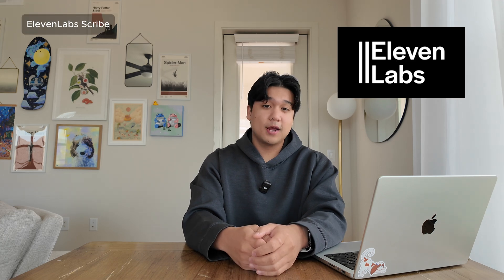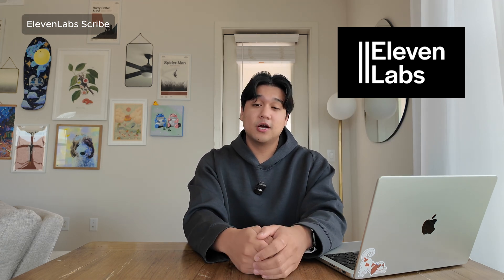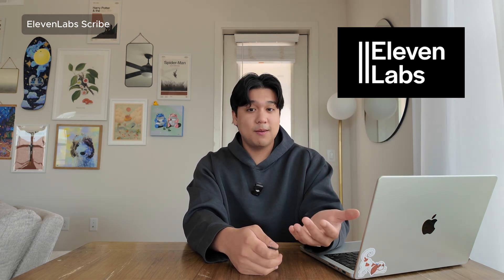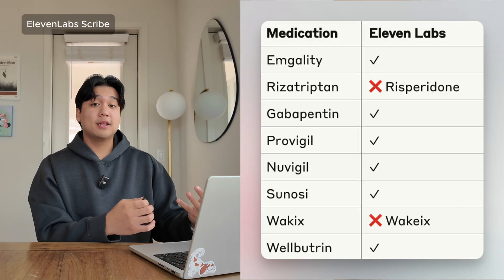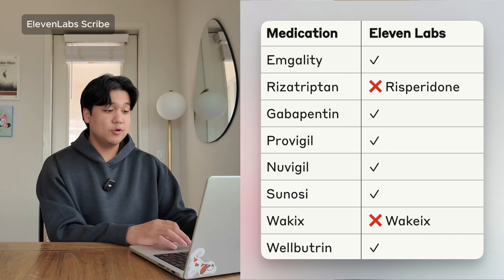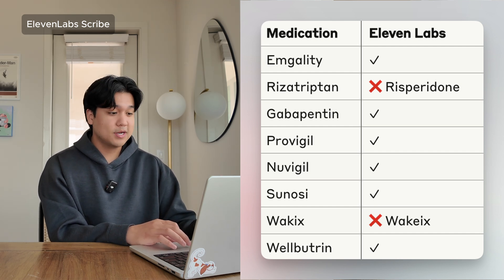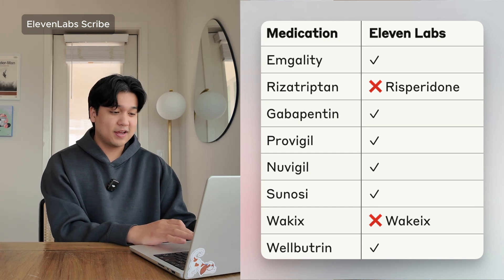The first model was ElevenLabs Scribe. ElevenLabs is not usually known for speech-to-text — they're more known for text-to-speech capabilities — but we wanted to give them a shot because at the time of building, they recently came out with this model, which was HIPAA compliant and claimed to have really good accuracy with medical terms. It got a lot of correct terms like amgality and Wellbutrin, but it did make some mistakes like confusing rizatriptan with risperidone, which is extremely problematic because these are entirely different medications with different effects.